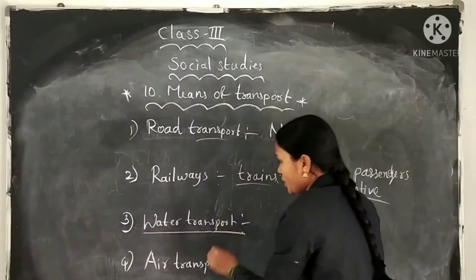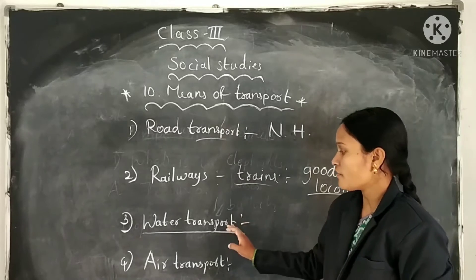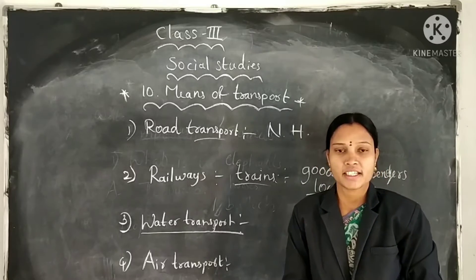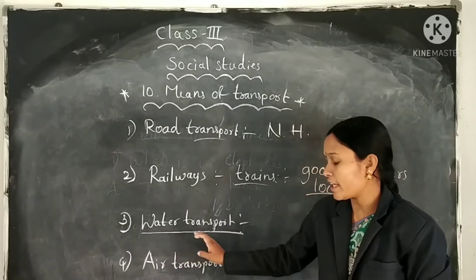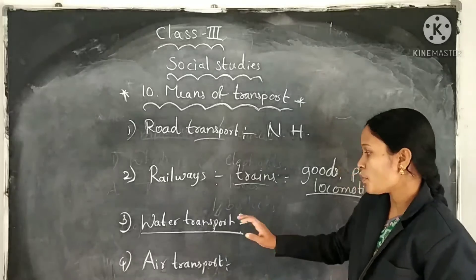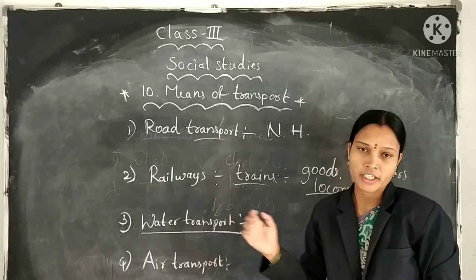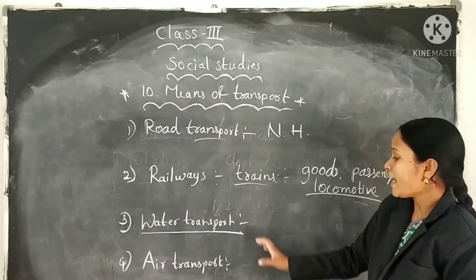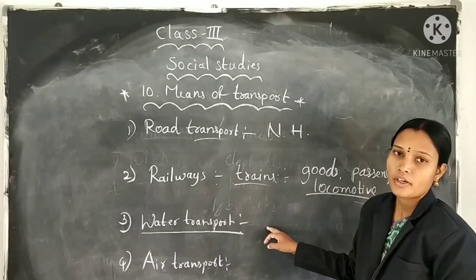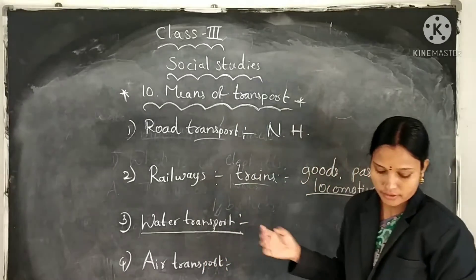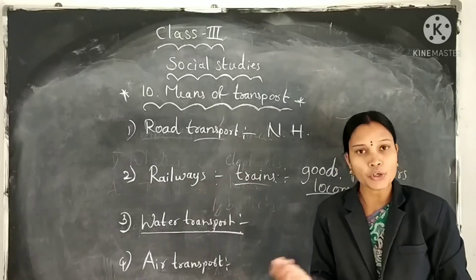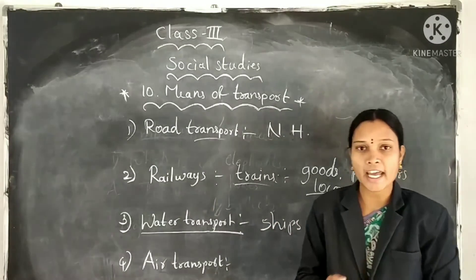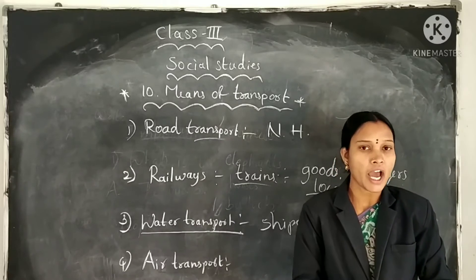Next transport is water transport. Which vehicles are used for water transport? Ships, boats, steamers. These are used for water transport. Water transport is the slowest and cheapest form of transport. Tankers carry oil from one country to another. Ships sail on oceans, carrying goods and people from one country to another.